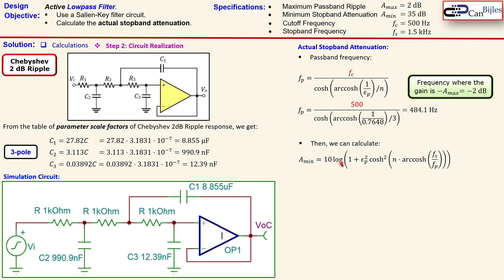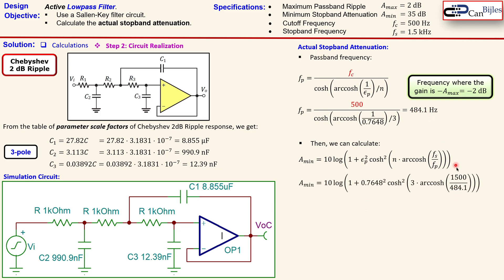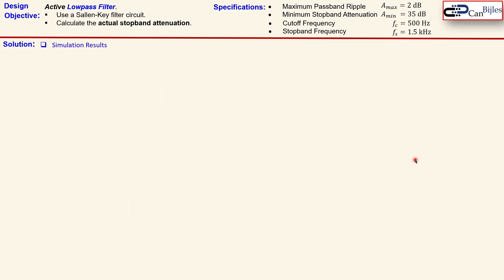For the Chebyshev A_min calculation, the formula uses a log with 1 + epsilon_p², then a hyperbolic cosine expression involving the filter order and the ratio of stopband to passband frequency. We must use the passband frequency here — not a shortcut cutoff formula. Substituting the stopband frequency of 1500 Hz, the passband frequency, and n = 3 yields A_min = 38.5 dB, which exceeds the required 35 dB.